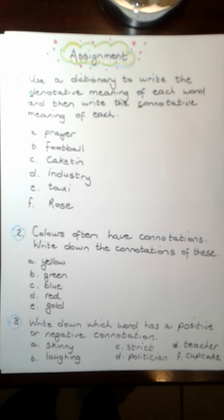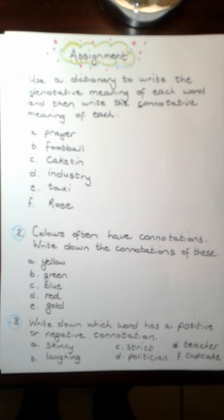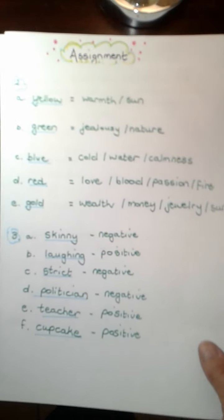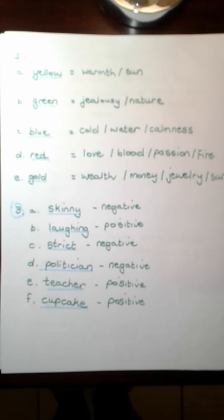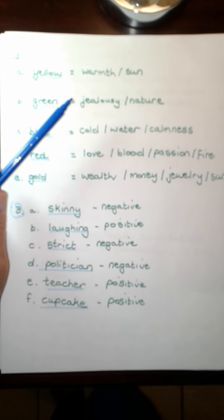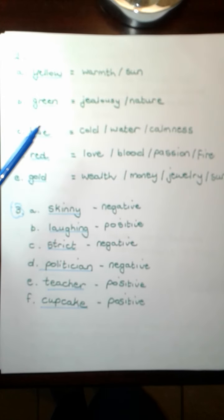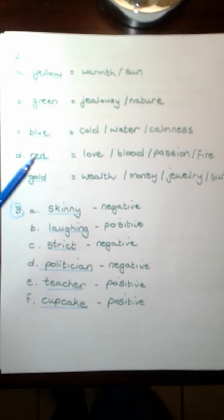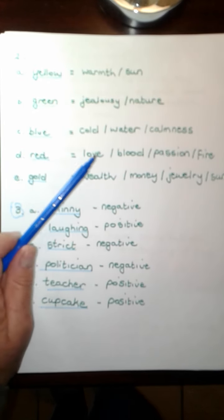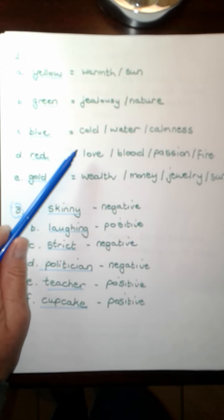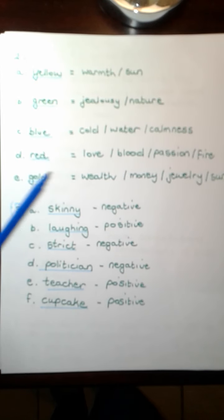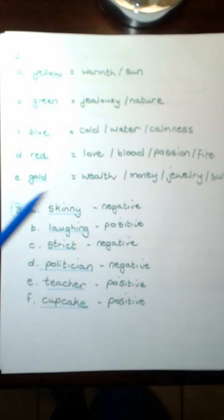Then the second one, colors that often have connotations. Write down the connotations of yellow, green, blue, red and gold. Yellow. When I think of yellow, I think of warmth or the sun. Green conjures up ideas of jealousy, maybe nature. Blue: cold, water, calmness. Red conjures up the connotative idea of love, blood, passion and fire. Gold. When I think of gold, I think of wealth, money, jewelry, maybe the sun.